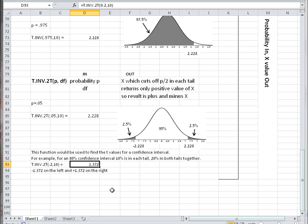This means we have a minus 1.372 on the left which cuts off 10%, and a plus 1.372 on the right which cuts off 10%, leaving 80% in the middle.